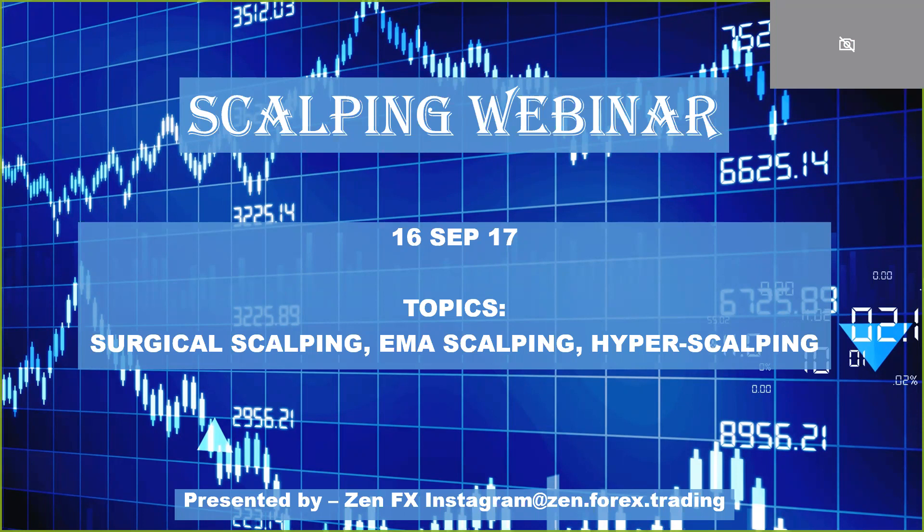I'm also going to throw in a fourth method as a bonus, which is called PIPO — that is price in and price out.